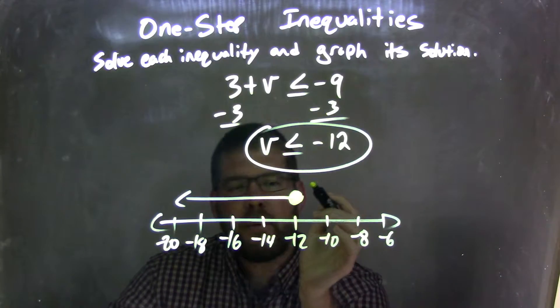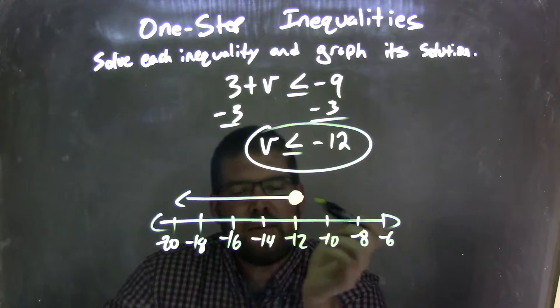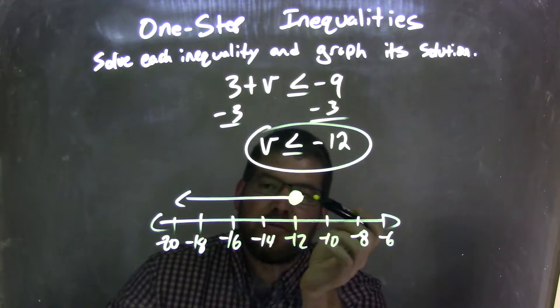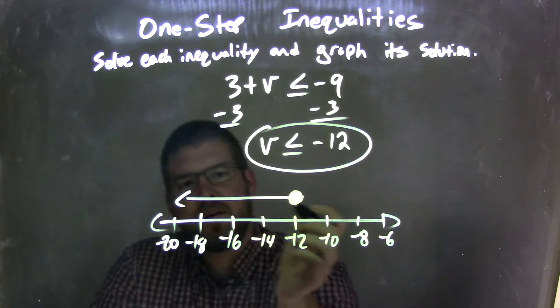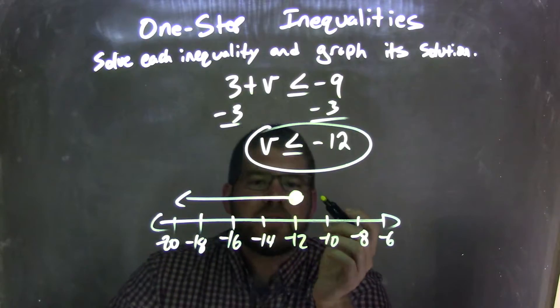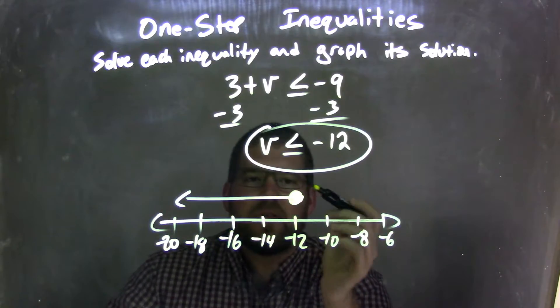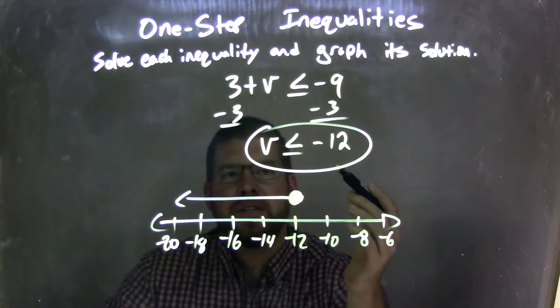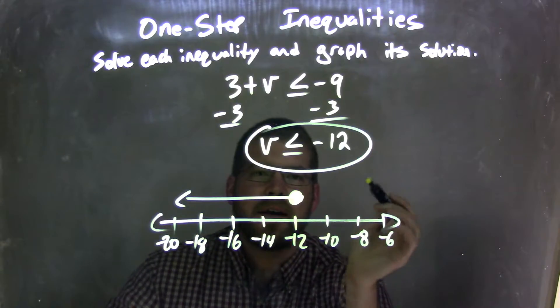And then from that point, I saw the less than sign so the arrow needs to go to the left. So since it's going to the left, I can do the arrow to the left there. And that shows all the values that v could be. And so this graph matches our final answer, which is v is less than or equal to negative 12.